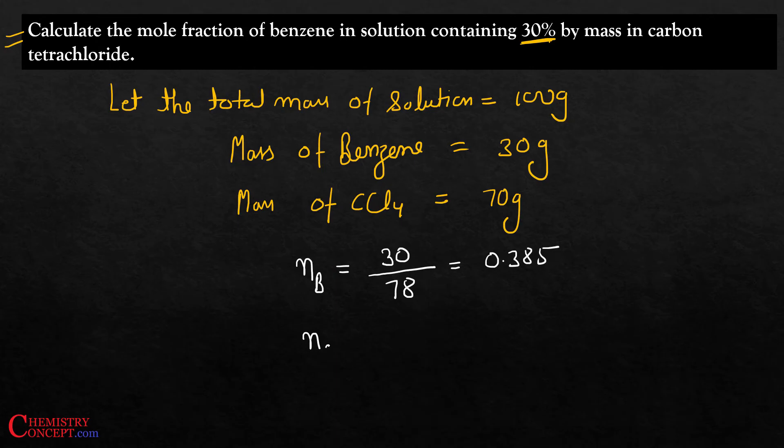Number of moles of carbon tetrachloride will be mass of carbon tetrachloride, 70 grams, divided by its molar mass. The molar mass of carbon tetrachloride is 154 grams, which comes out to be 0.45 moles.